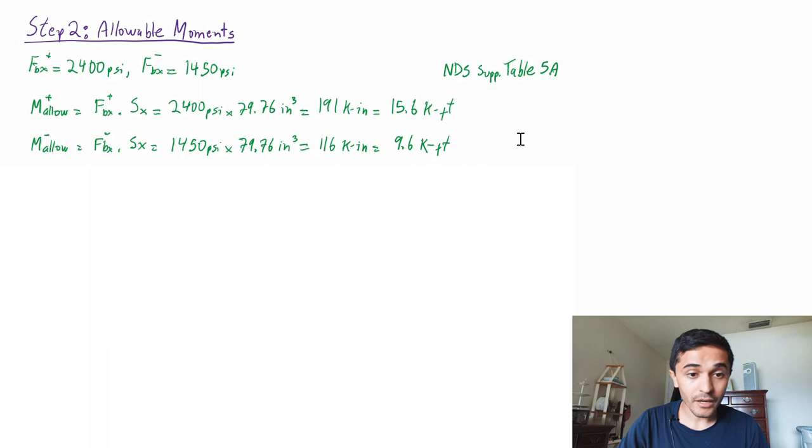Now we're back at our calcs and to get the moment we just need to multiply the design value times the section modulus. Because all the adjustment factors are 1 we're not even going to go into multiplying all of them for a glulam beam but you could go to the NDS and see all the adjustment factors that you would need to use before multiplying by the section modulus.